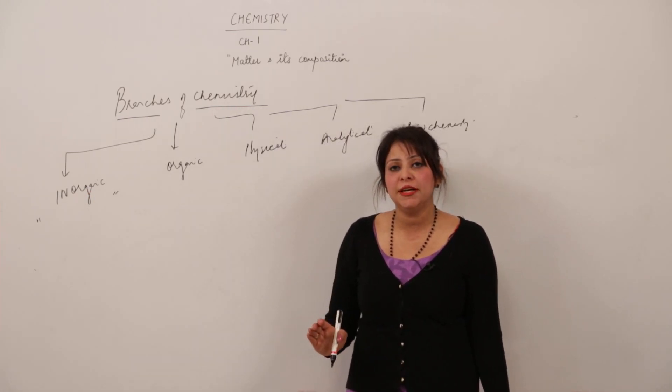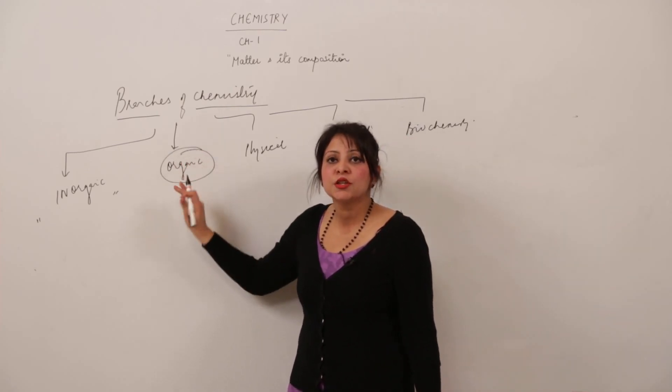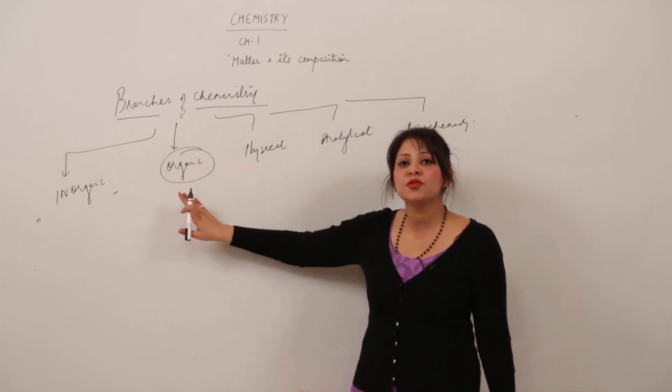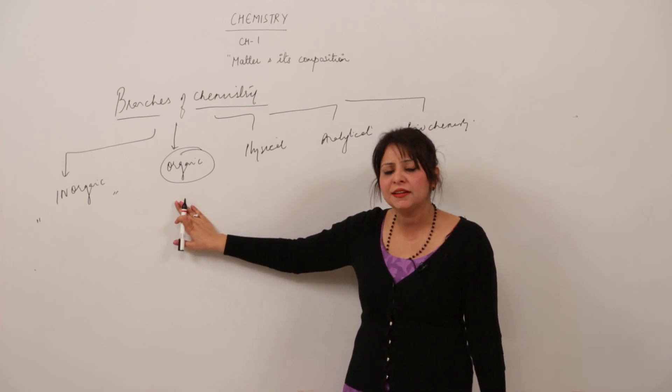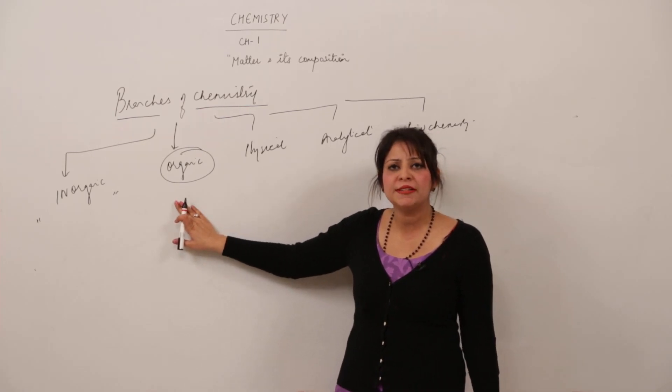We have a separate branch to study carbon, that is organic chemistry. Organic chemistry is a branch which deals with the study of carbon and its compounds. It may contain some other elements also in traces, but the main constituent is carbon.